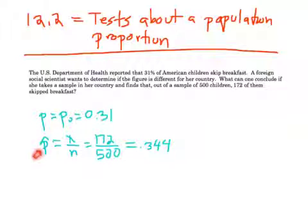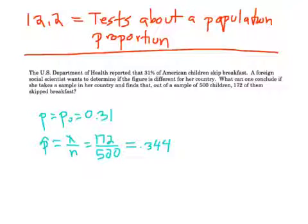P-hat is actually from our sample. Notice this formula we've seen before: P-hat is x over n. 172 over 500 is about 34.4%.